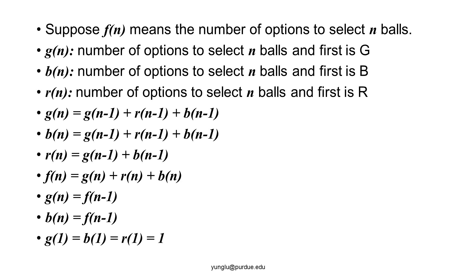R(N) is the number of ways to select N balls where the first ball must be red. If the first ball is green or blue, there is no restriction on the second ball. Thus the second ball can be green, blue, or red. After we select the first ball, we need to select N minus 1 balls. Thus we can express G(N) as the sum of G(N−1), R(N−1), and B(N−1).